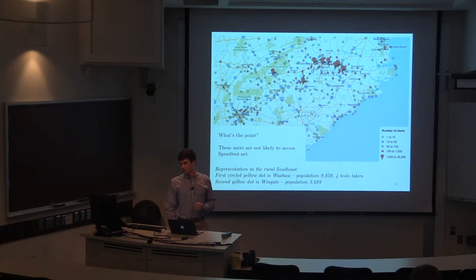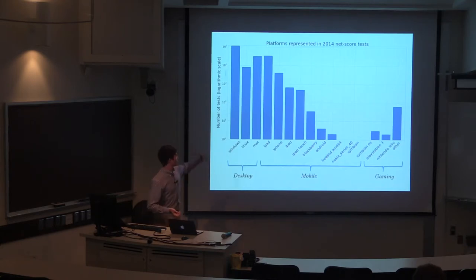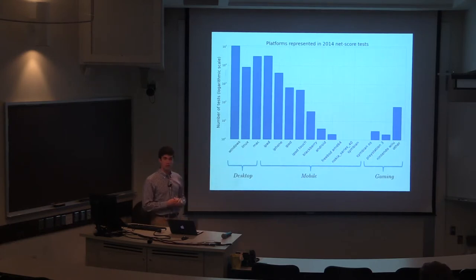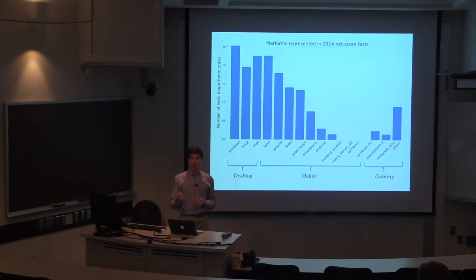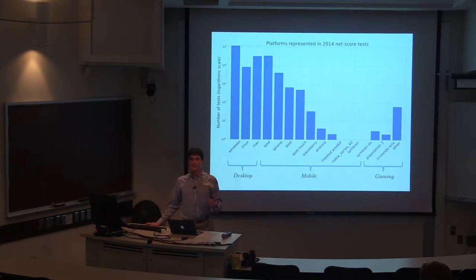This is a breakdown of the representation we saw in our data by platform — three main categories: desktop, mobile, and gaming. We have typical users on Windows, Linux, and Mac browsing on their laptops. Note the Y-axis is in logarithmic scale. We saw representation on all sorts of mobile platforms — from iPad to Blackberries to Android phones to Nokia Series 40 phones — very minimal hardware. These tests are possible to take on your phone without downloading any app or Flash plugin. Gaming platforms were also represented — people accessing browsers on PlayStation 3s and Nintendo Wiis.